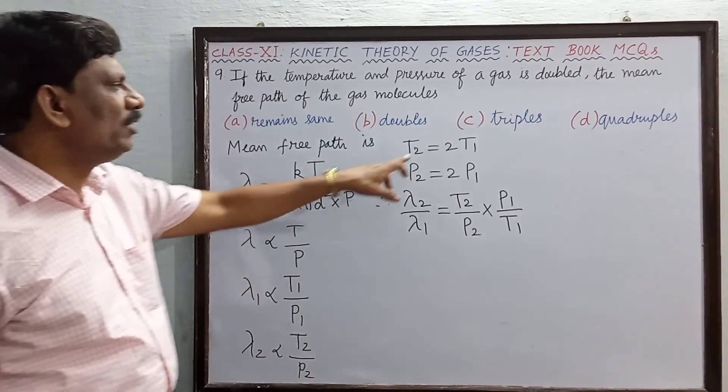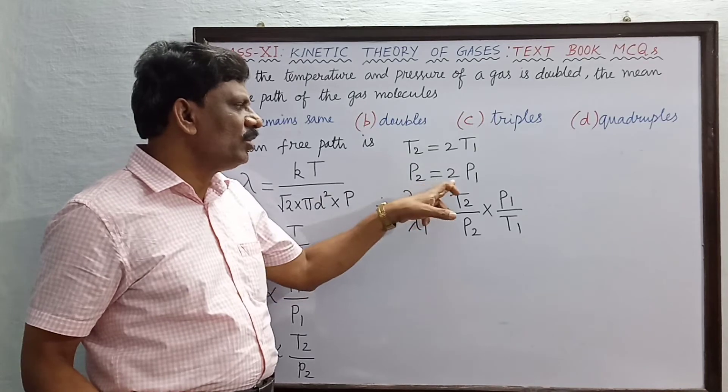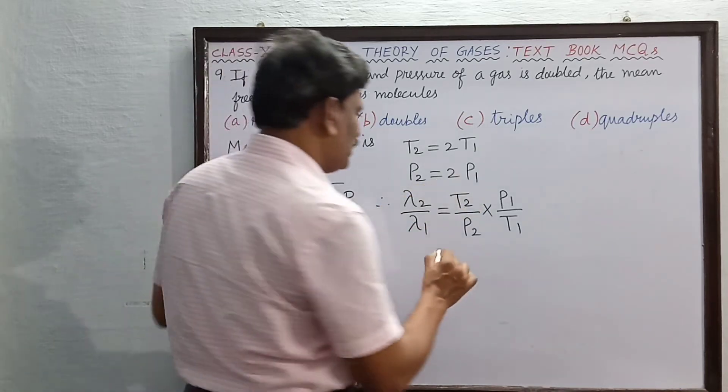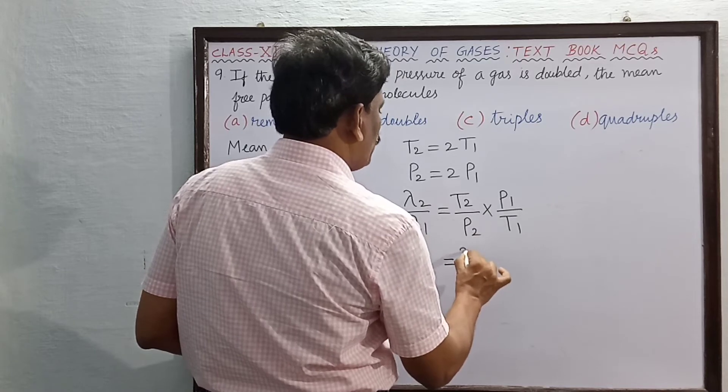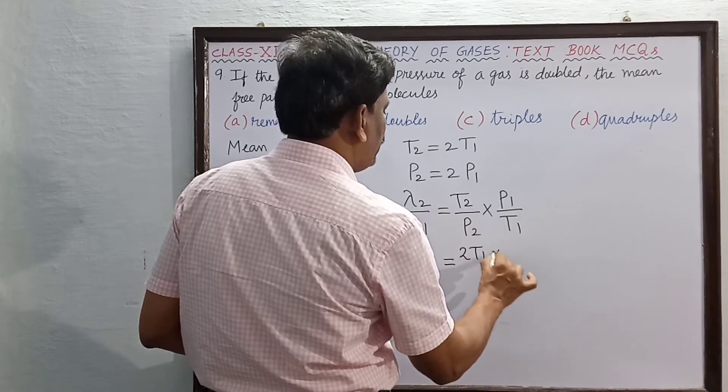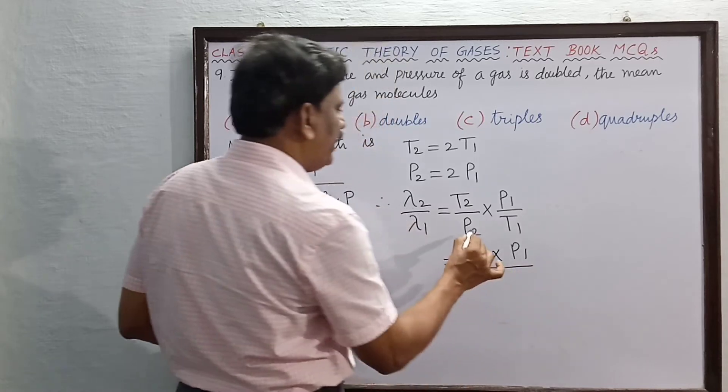T2 is 2T1, P2 is 2P1. This equals P1 times P1 divided by P2.